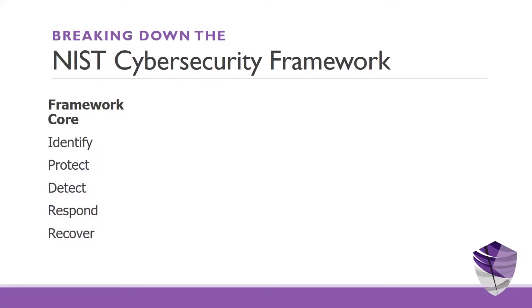Let's look at the framework as a quick overview. The framework has five core tenets. The first is Identify — basically understand what you have in your organization. The second is Protect, which is to figure out how you're going to defend that stuff, how you're going to protect the things you identified in tenet number one.